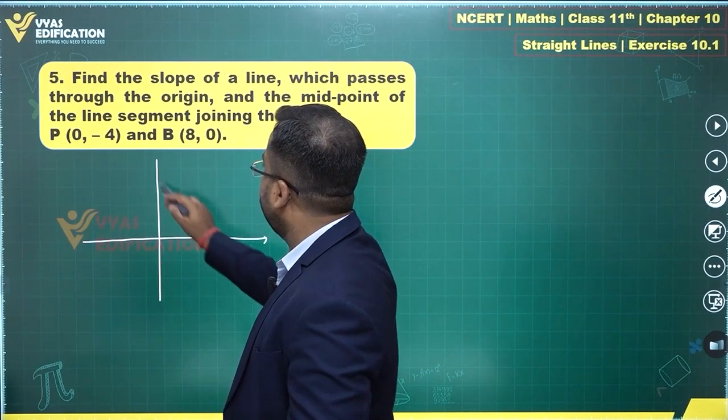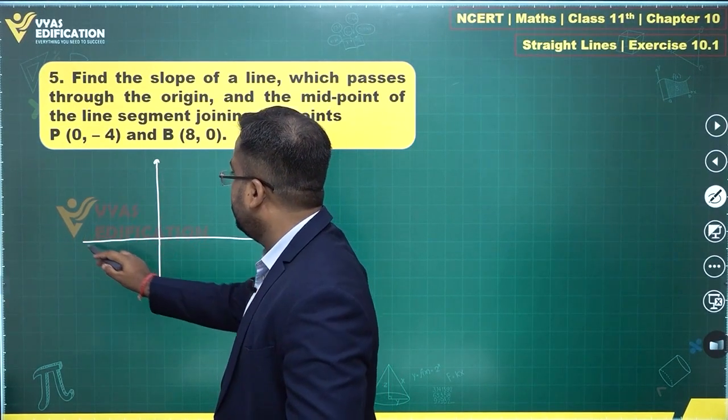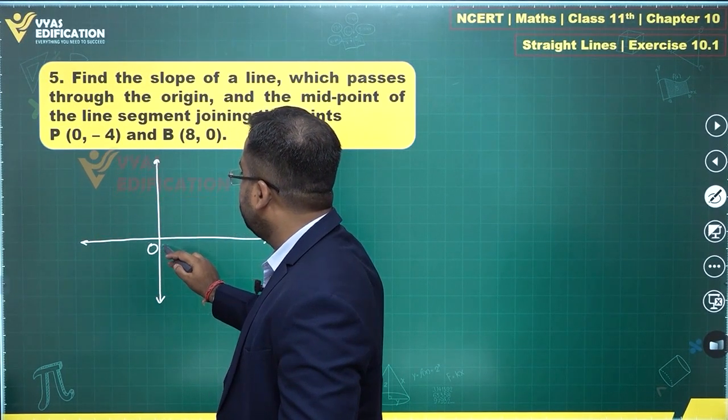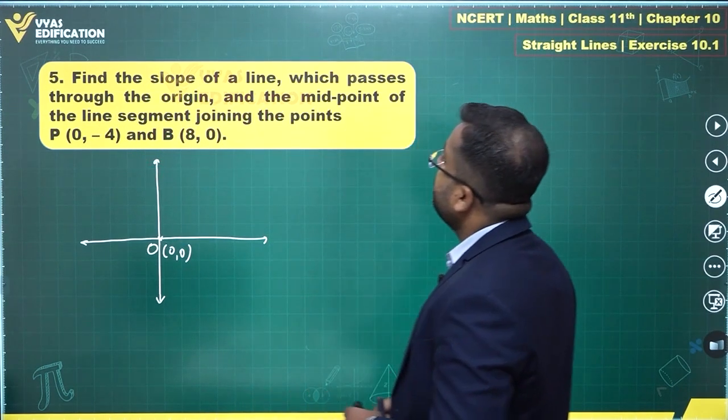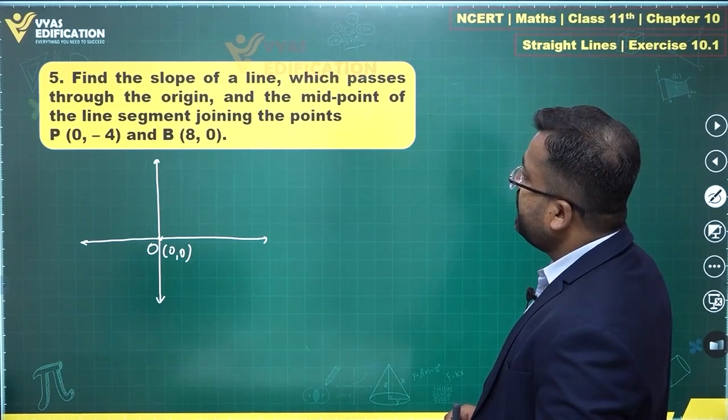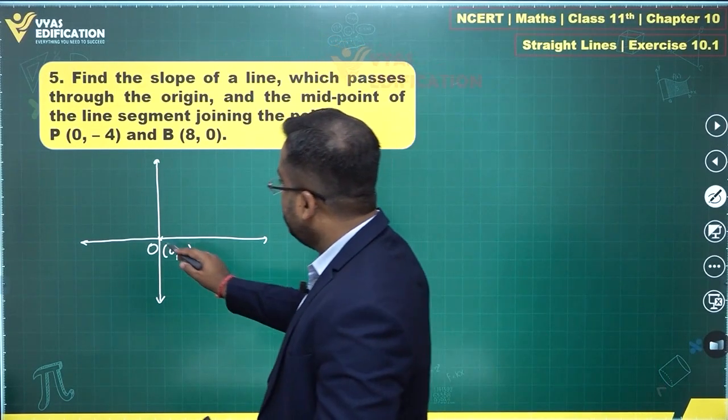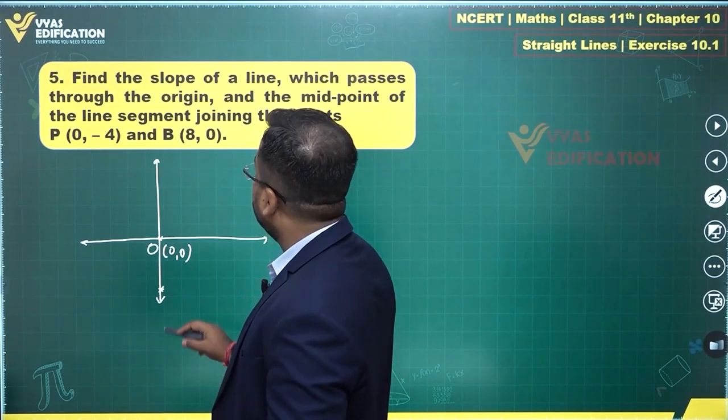Let's try to mark these points. The origin is zero comma zero. This is what you can observe. And joining the midpoints of zero comma minus four - zero comma minus four will be somewhere here.